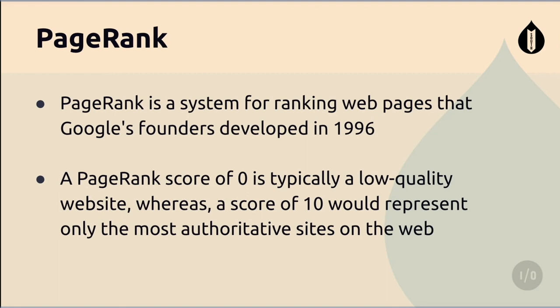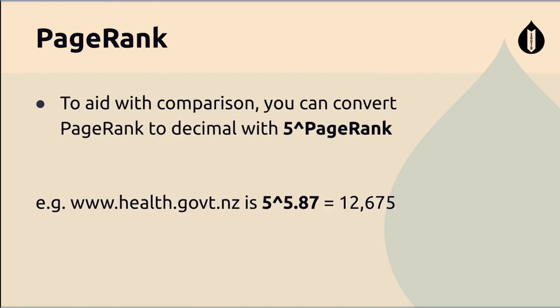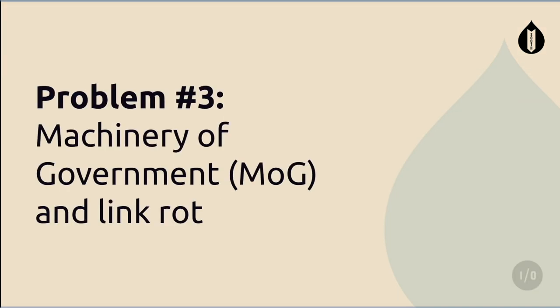For the purposes of this talk, a score of zero basically means the site is low quality or brand new, and a score of 10 would be like Wikipedia. Page rank is logarithmic with a base of five, similar to the Richter scale but different. This means a page rank of four is five times more authoritative than a site with a page rank of three. You can convert it to decimal for the purposes of math and then add scores together.